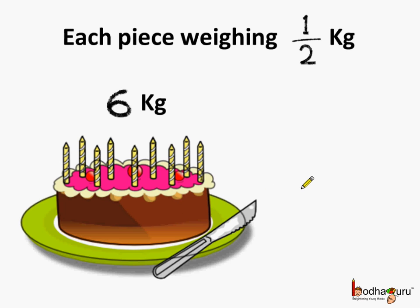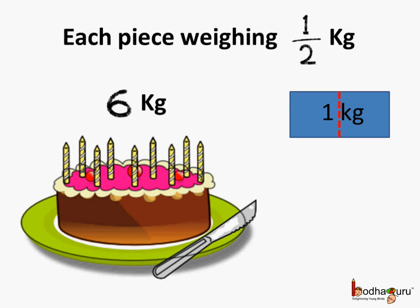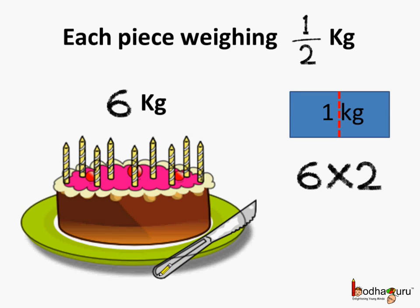Now if the cake was 1 kg, we could cut it into 2 pieces of half kg each — half kg and half kg — so we get 2 pieces. For 1 kg we get 2 pieces, that means for 6 kg we will get 6 into 2, that is 12 pieces, to make each piece of half kg. Now you may think we wanted to do division but here we are doing multiplication and got the correct answer.